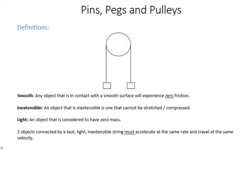If you see something that's considered light, that means we're approximating it has no mass. We usually say strings are light because compared to objects hanging off them their mass is negligible.